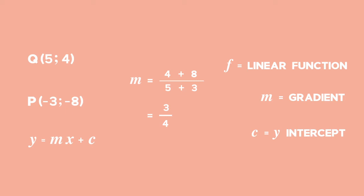Now that we have the value of our gradient m, which is 3 over 4, we have to work out the value of our y-intercept, which is represented by c. First, we need to substitute x and y with values from point Q or P found on our line. Let's use the point Q. In our formula y equals mx plus c, we substitute y with 4 and x with 5.